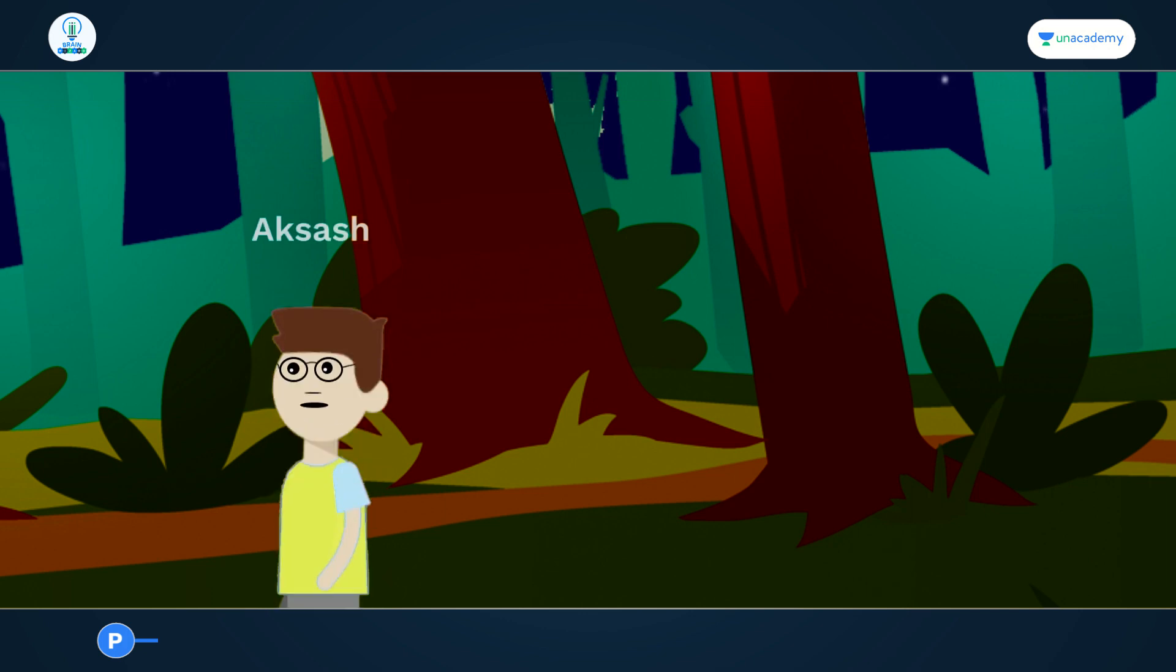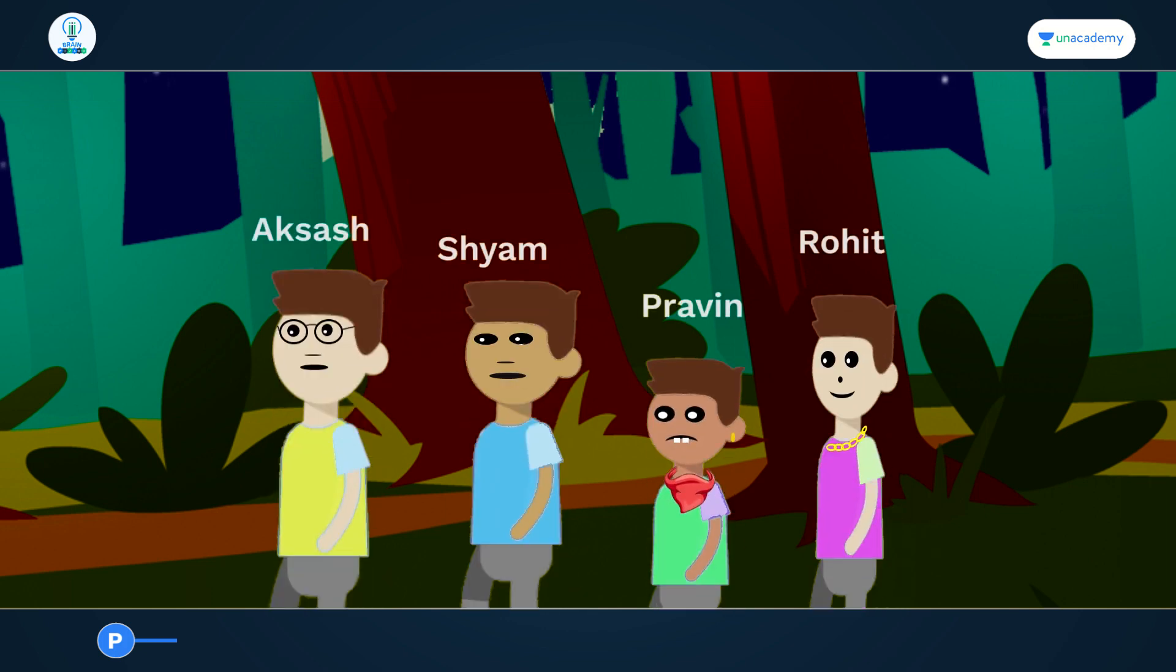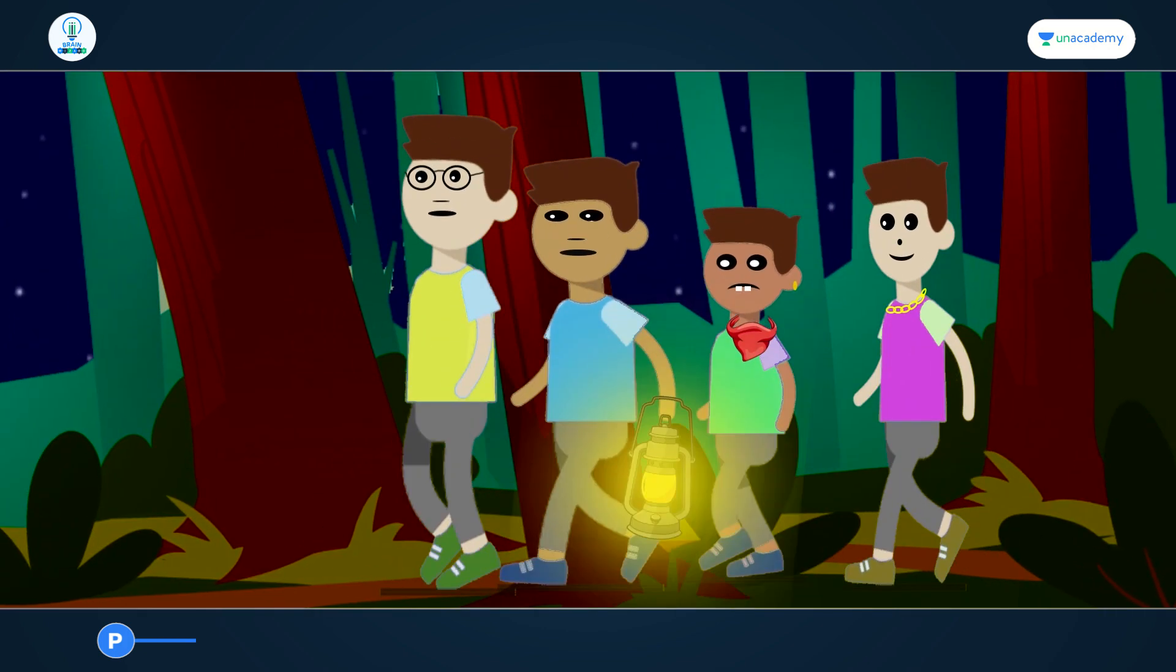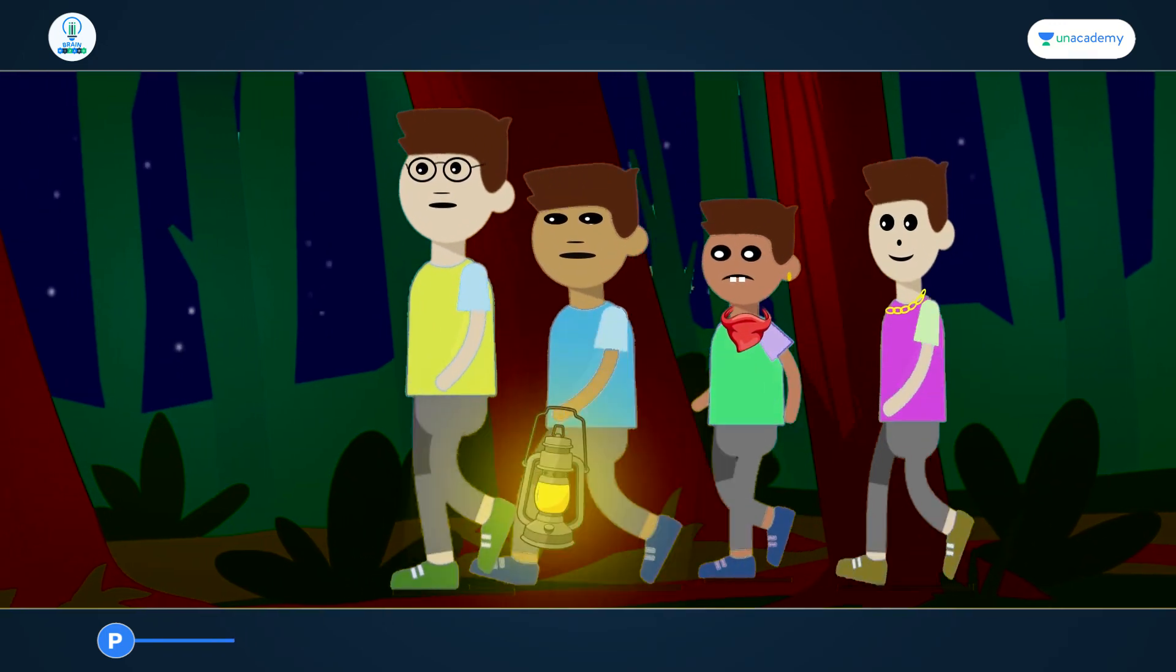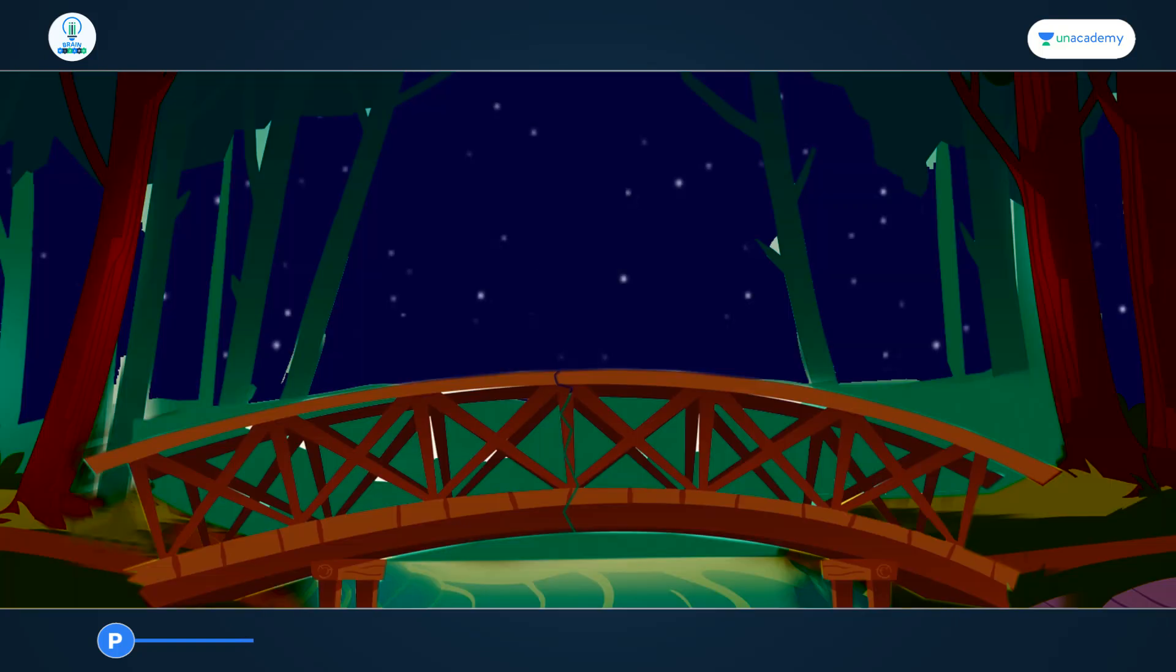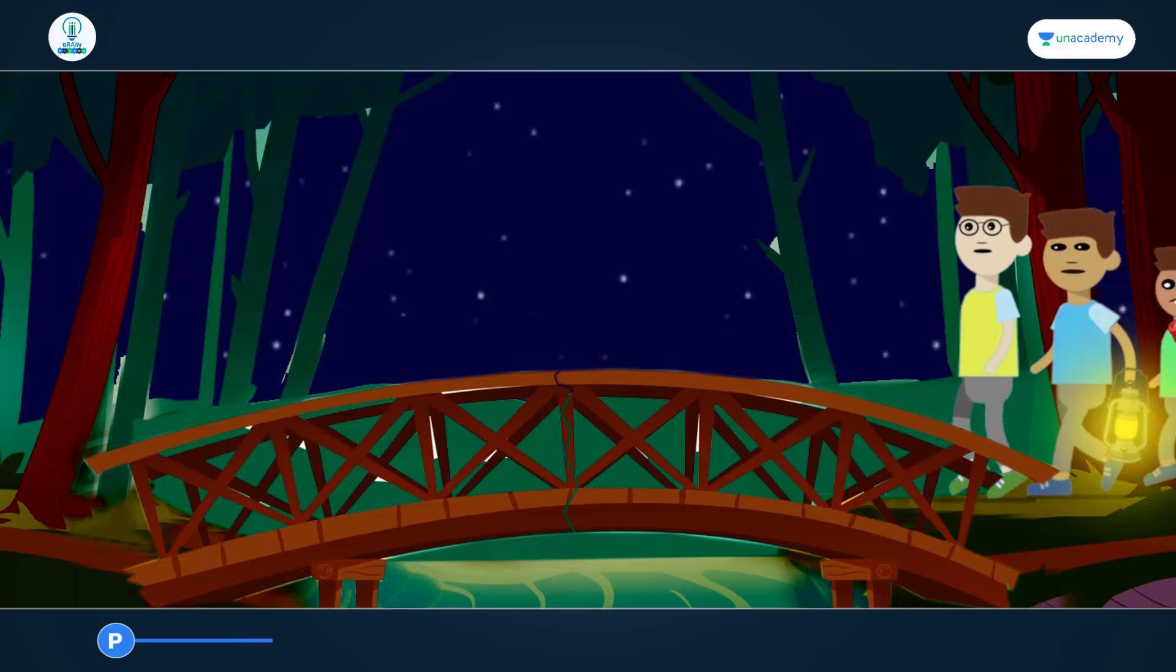There are four friends: Akash, Shyam, Praveen and Rohit. They are returning to their hostel and it's late evening. It is completely dark around and they have just one lamp among themselves. On the way, they have come across a cracked bridge.